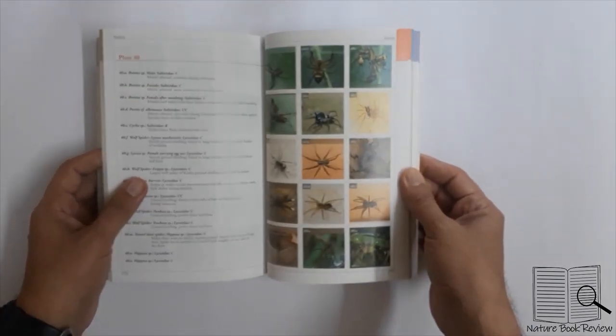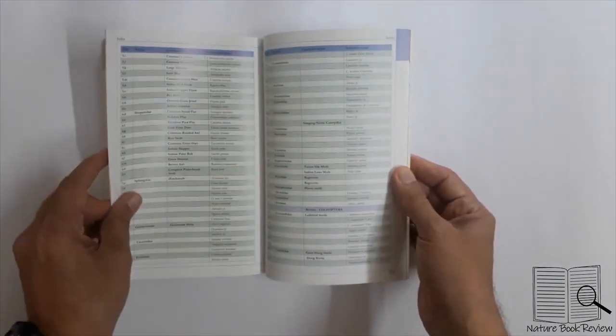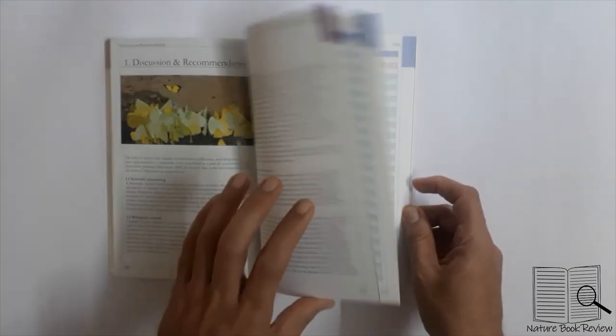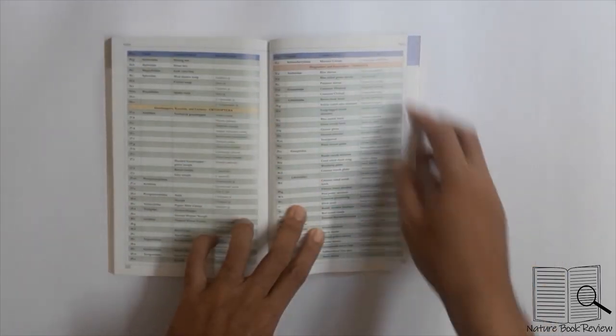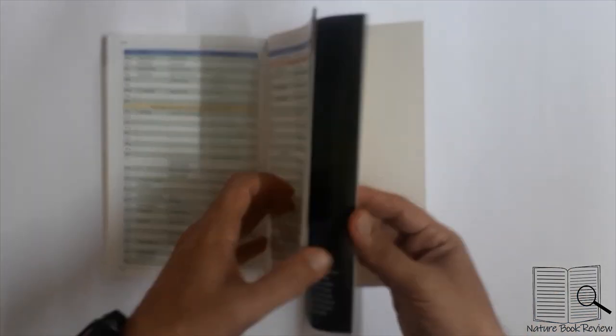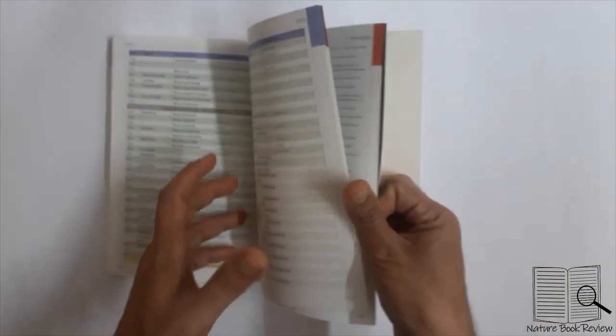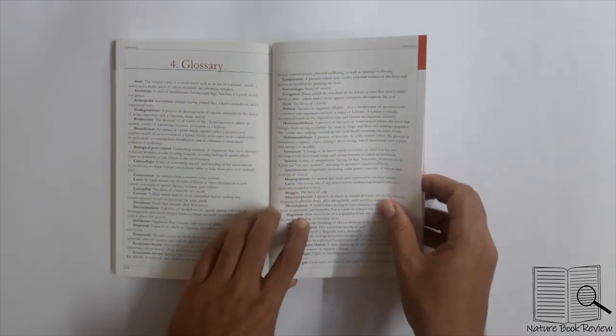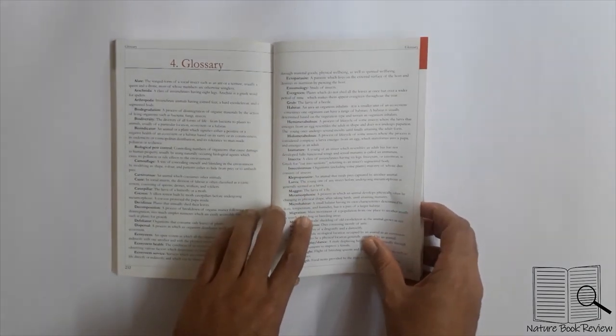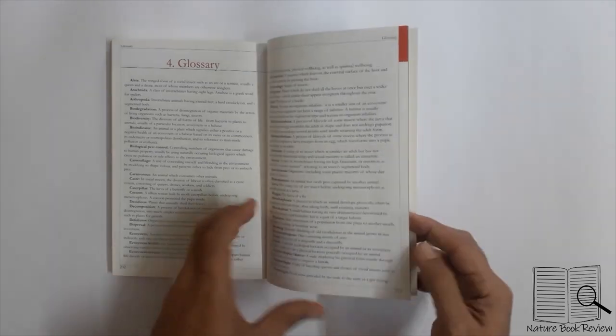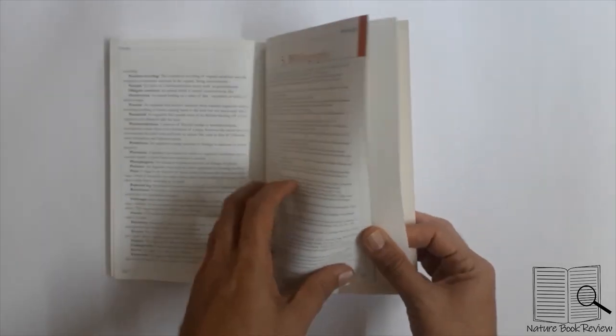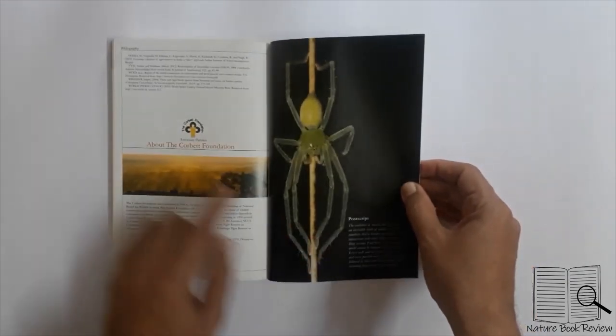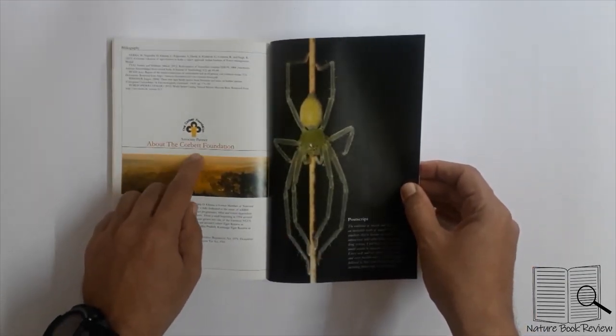These are the spiders, and lastly the author has given the index of species found in Kanha Tiger Reserve. At the end you'll see a glossary which is very important for insects and spiders because there are many terminologies which have Latin and Greek origin. There's also a bibliography and a postscript about the Corbett Foundation.